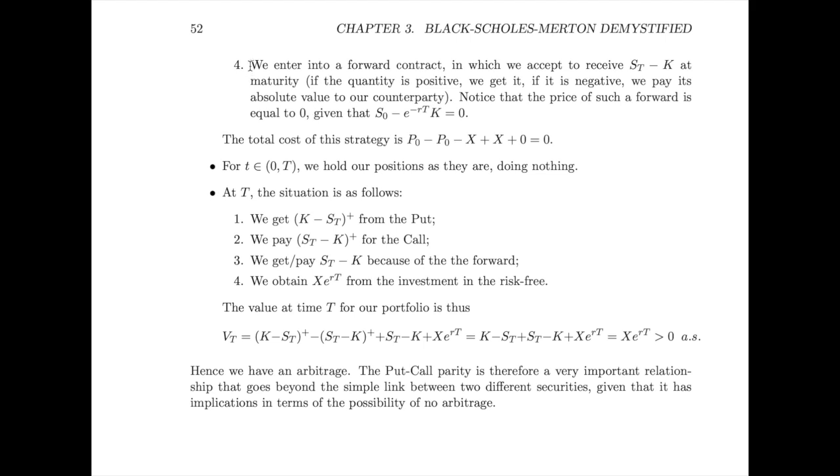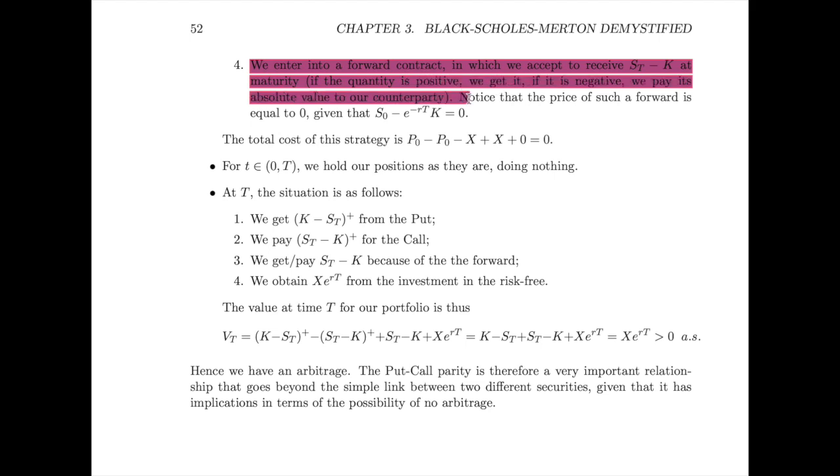Finally, we enter a forward contract where we receive S_T - K at maturity. If the quantity is positive, we get it; if negative, we pay it. The price of such a forward contract at time 0 is zero. So the cost of this strategy is zero, and it is self-financing.